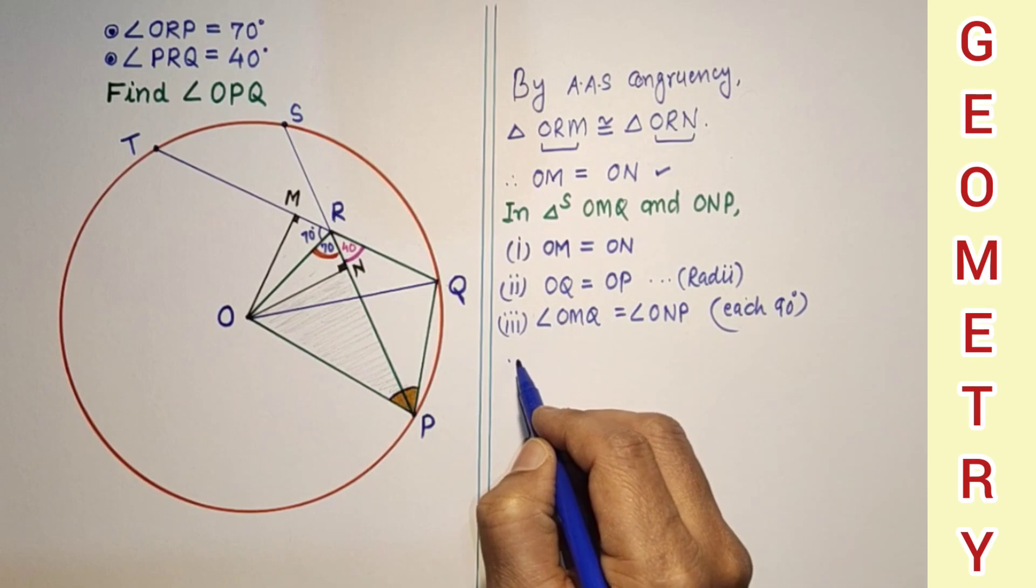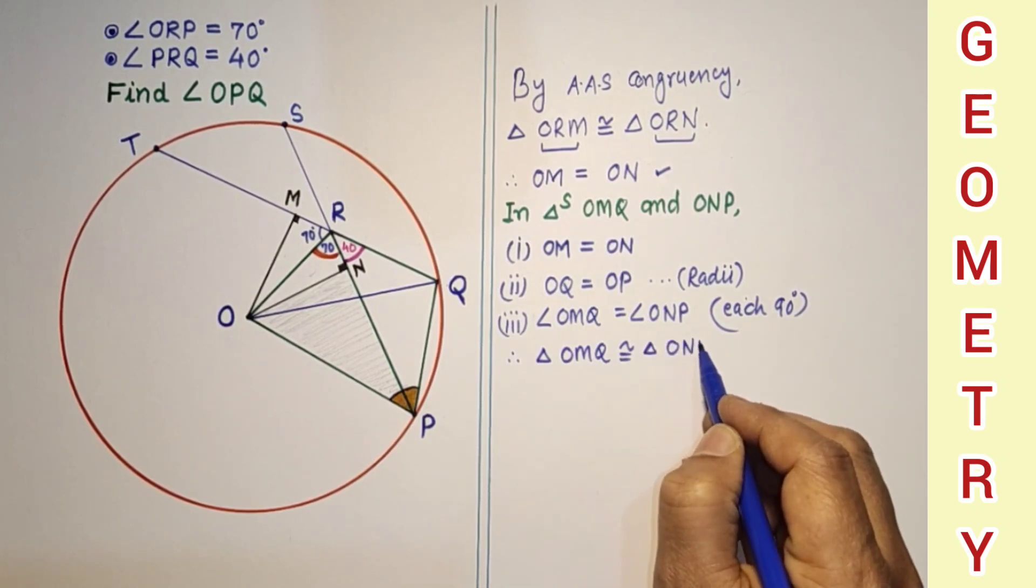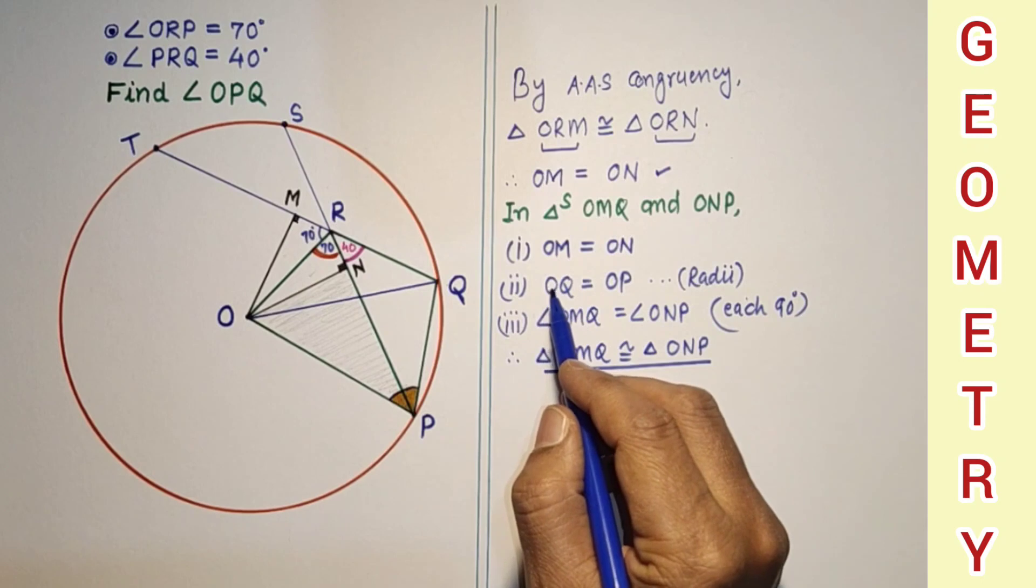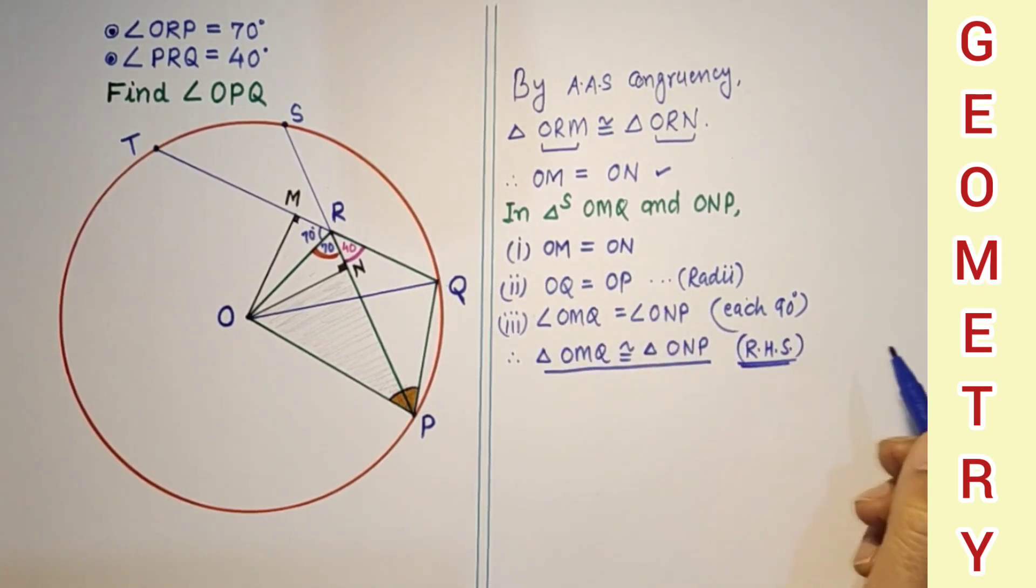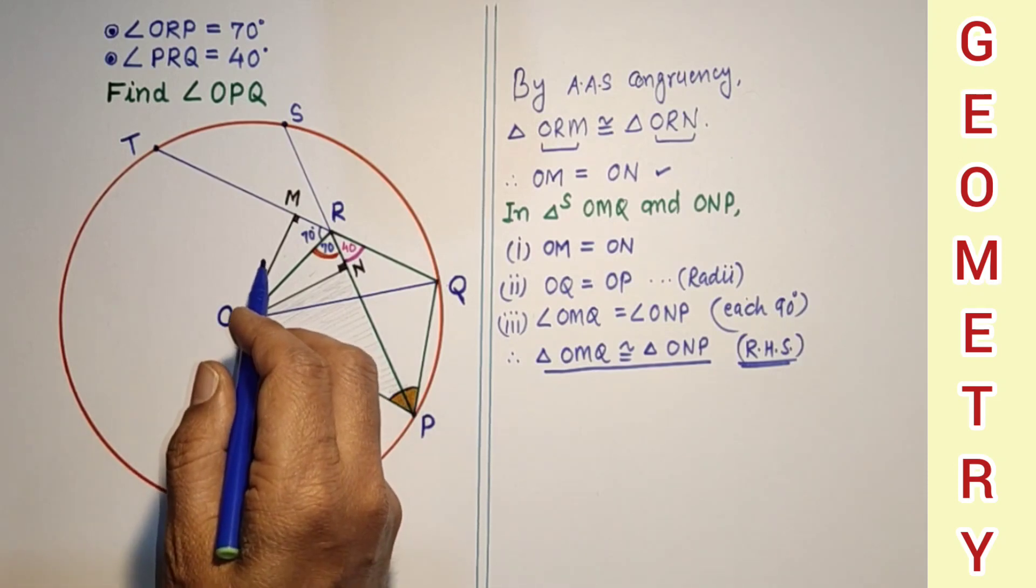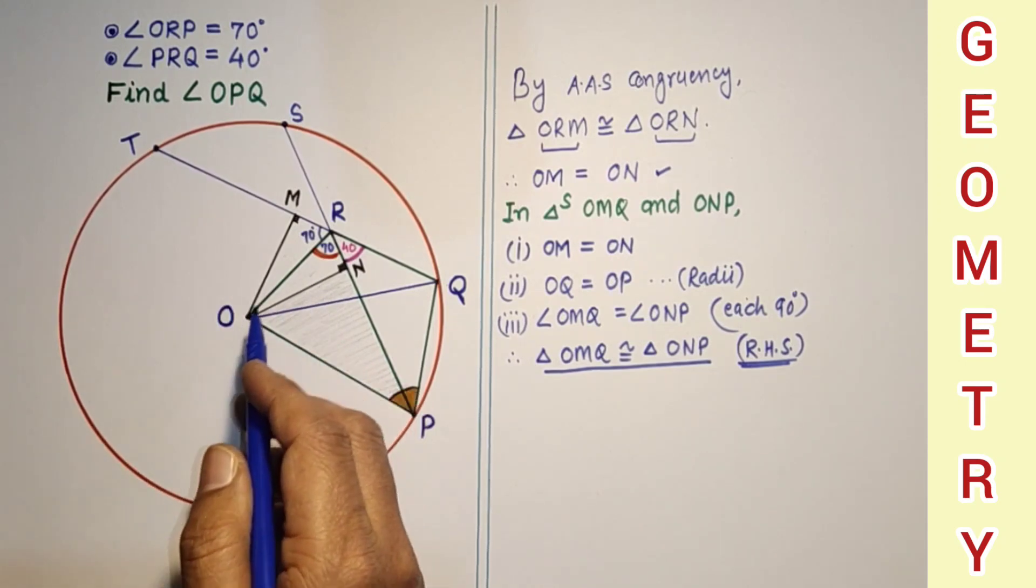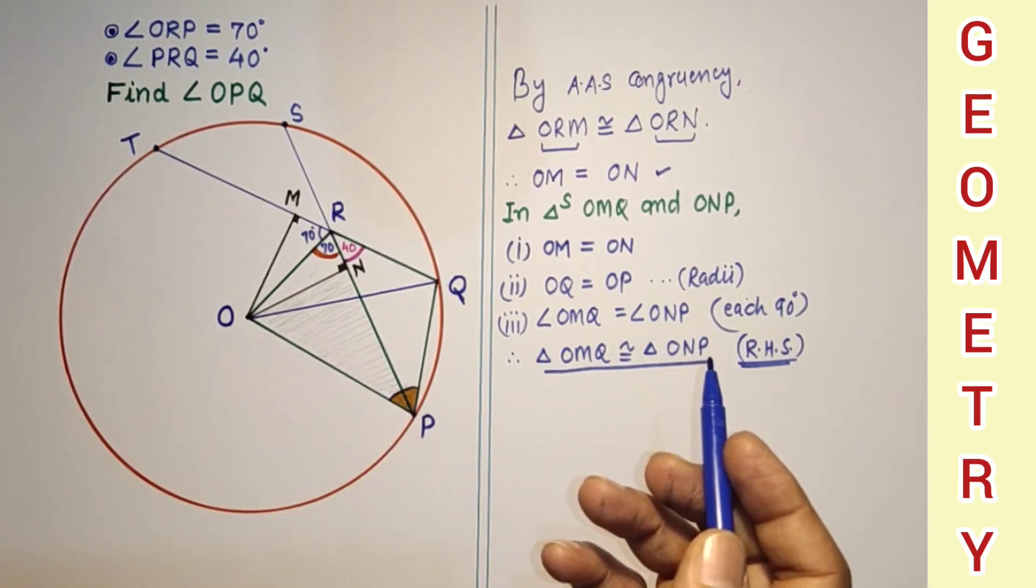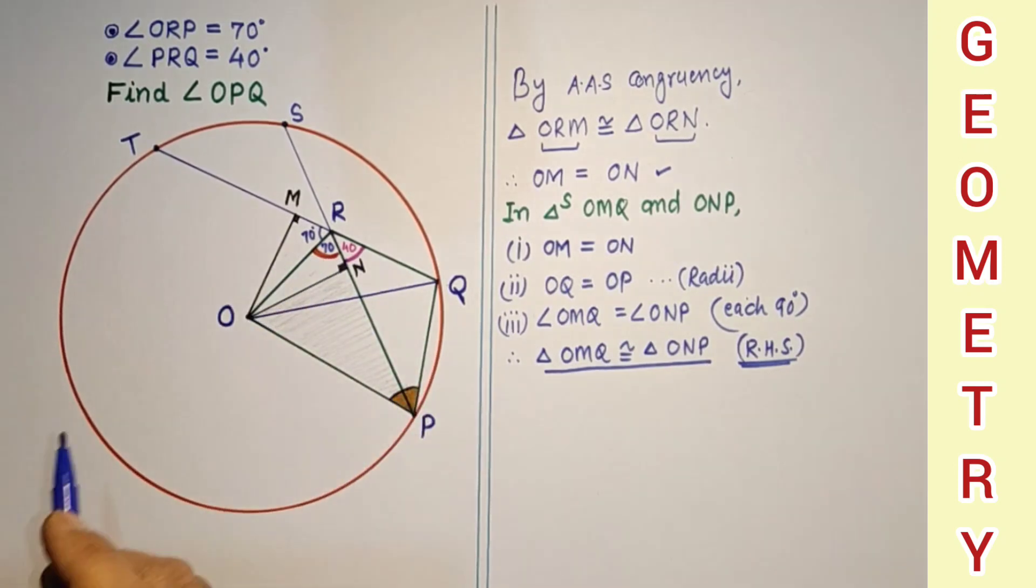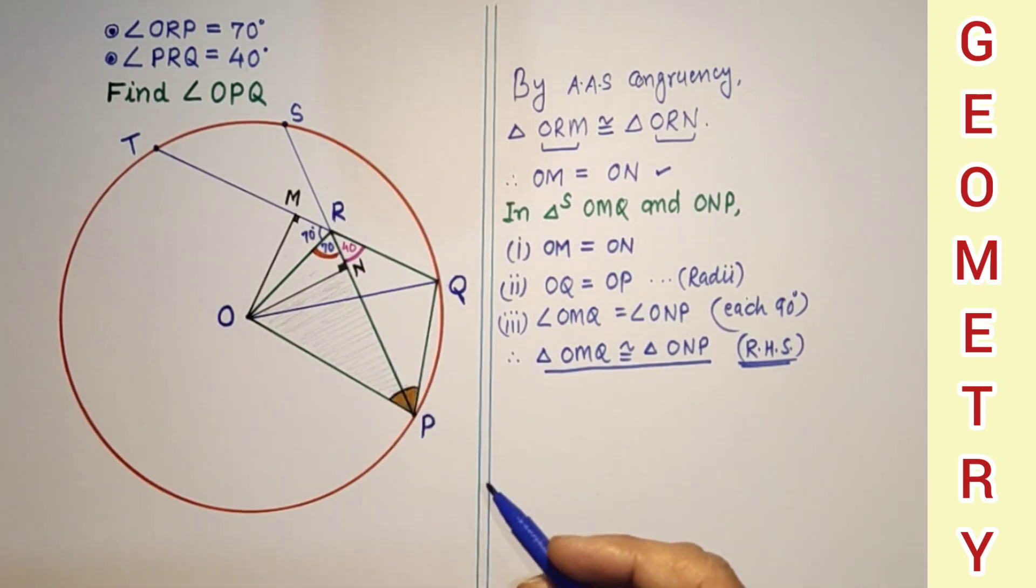So therefore these two triangles, OMQ is congruent to triangle ONP, by right angle hypotenuse and side test congruency. We can say one more thing, by SSS test this also will be congruent, because the distance between the center and the chord are equal, OM is equal to ON, so equidistant chords will be equal, and if chords will be equal then their halves will also be equal. It means we found MQ is equal to NP, MQ is equal to NP, OQ is equal to OP, and OM is equal to ON, so by SSS test these two triangles will be congruent in that way also we can prove.